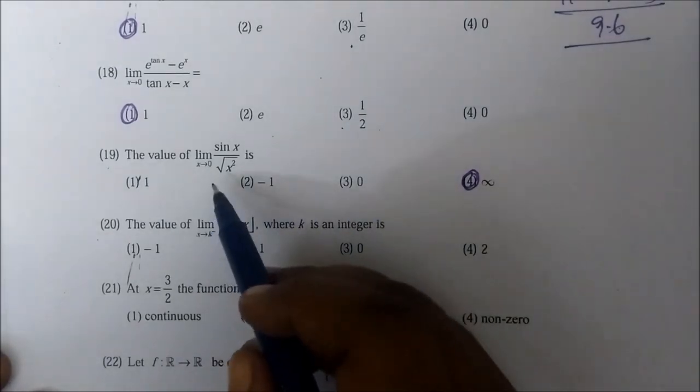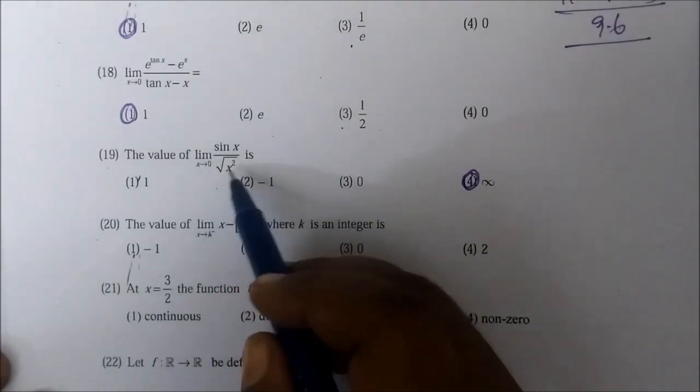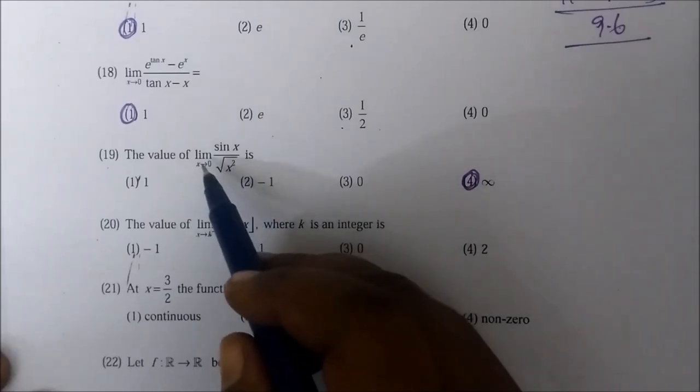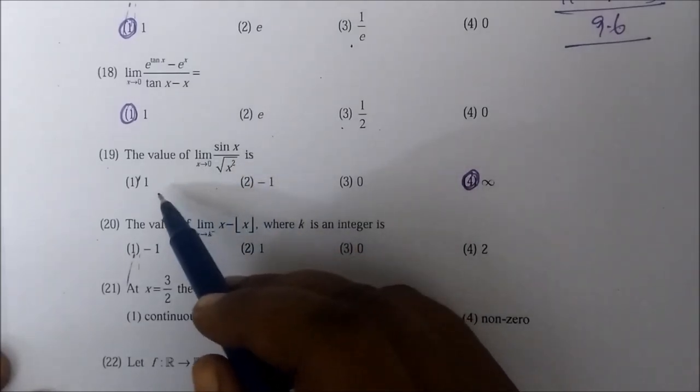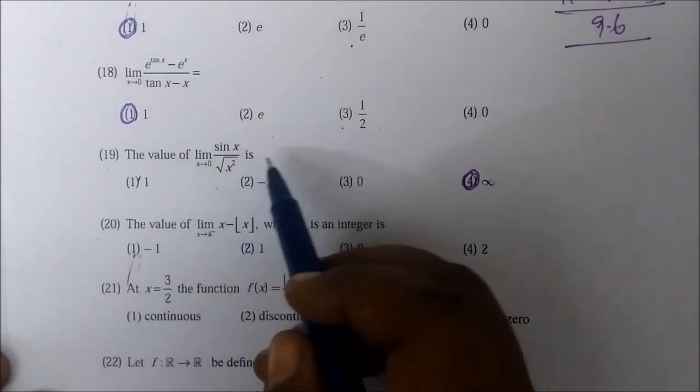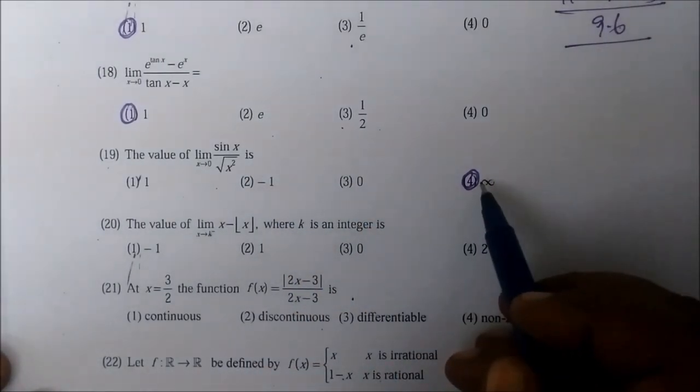If you look at this, we cancel the root 2 squared. The sin x by x limit extends to 0, it will be 1. But not that way, it will not work out. But now, the answer is infinity.